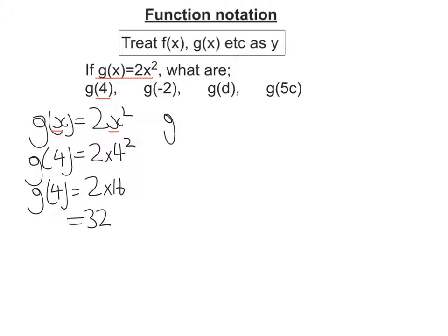Let's try g of negative 2. So first write out my function and then replace the x's with negative 2. So 2 times negative 2 squared.